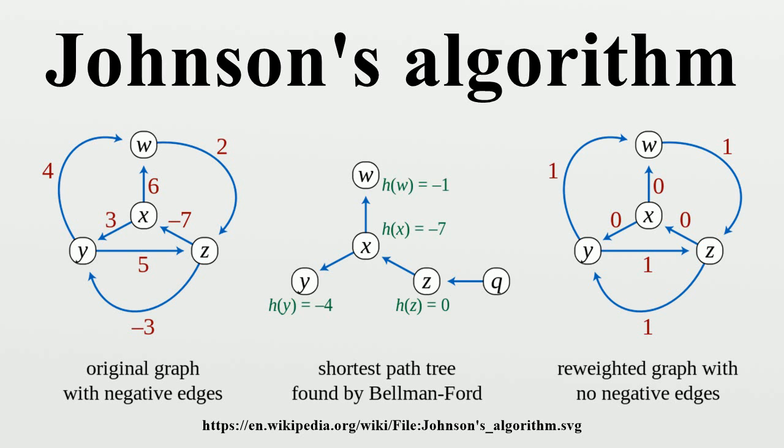The weight of edges that belong to a shortest path from Q to any node is zero, and therefore the lengths of the shortest paths from Q to every node become zero in the reweighted graph. However, they still remain shortest paths.